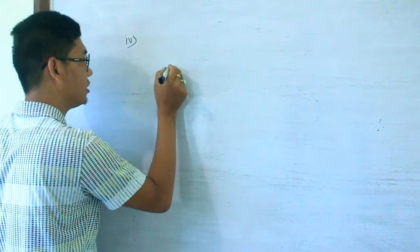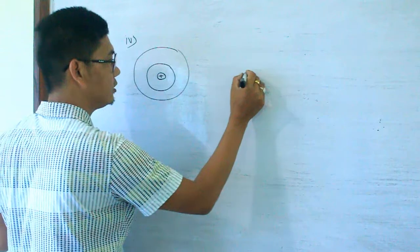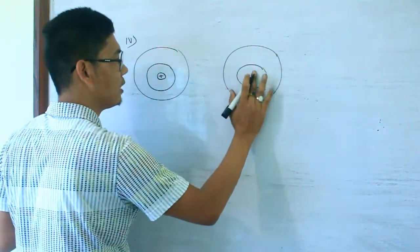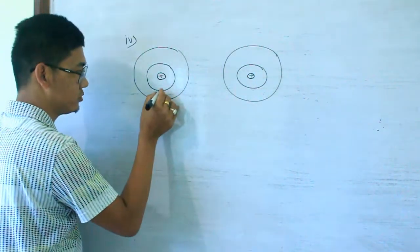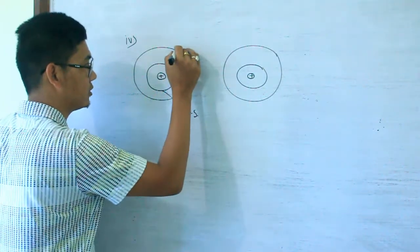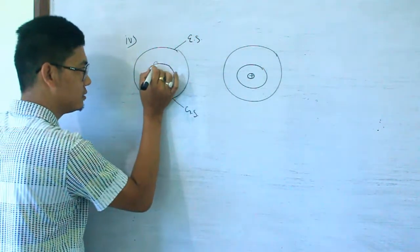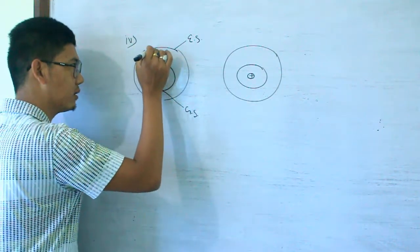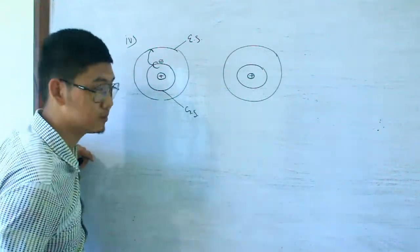When an electron jumps from one orbit to another orbit — from the first shell to the second — the electron will either lose or gain energy. This is the ground state and this is the excited state. When the electron jumps from one orbit to another orbit, at that time only atomic spectra are produced.